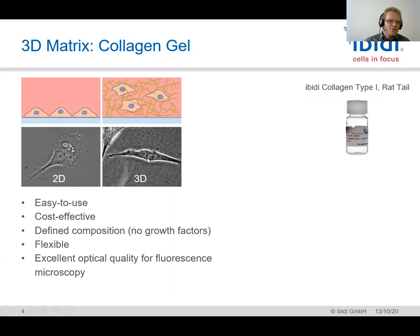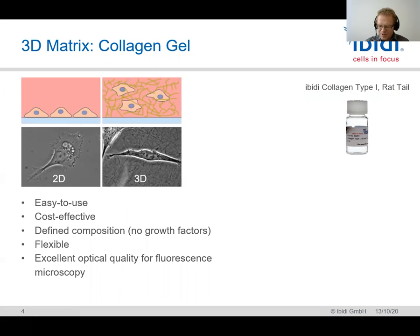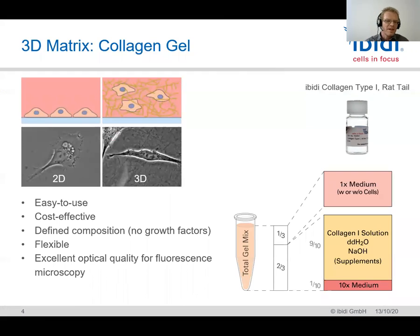This system is very nice and very easy to use, especially the collagen gels. They are very cost-effective, collagen has a very defined composition, it's very flexible in use — concentration-wise, growth factor-wise, and also chemokine-wise — you can add anything you want into the collagen to create your own composition of the collagen matrix. At the same time, the optical quality is really excellent, with perfect access for fluorescence microscopy, confocal microscopy, and so on.